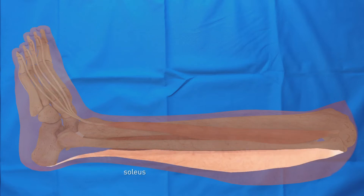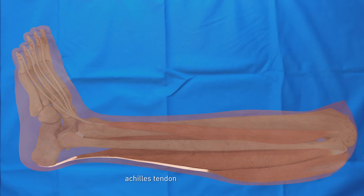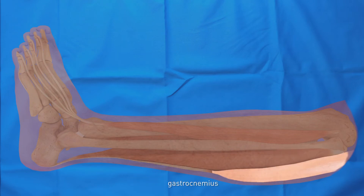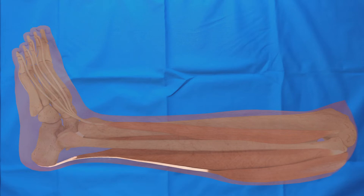The soleus muscle is one of the calf muscles running on the posterior side of the leg. It attaches to the Achilles tendon together with the two gastrocnemius muscles. The Achilles tendon is attached to the posterior surface of the calcaneus. Plantar flexion is performed through these muscles and the corresponding Achilles tendon.